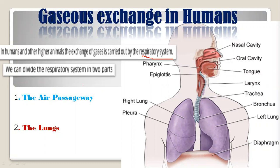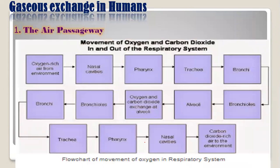Gaseous exchange in humans. In humans and other higher animals, the exchange of gases is carried out by a certain system called the respiratory system. We can divide that respiratory system into two parts: one is the air passageway and the other is the lungs. Here you can see a general structure of the respiratory system of human beings, having several parts which we will discuss one by one.